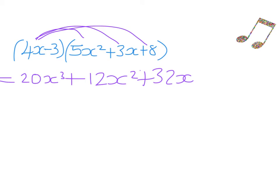Now we take the negative 3 and multiply it by each term. Negative 3 times positive 5x squared — negative times positive is negative: 3 times 5 is 15, so negative 15x squared. Negative 3 times 3x — negative times positive is negative: 3 times 3x is 9x, so negative 9x. Negative 3 times positive 8 — negative times positive is negative: 3 times 8 is 24, so negative 24.